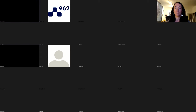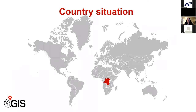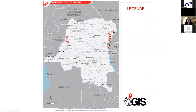Today I will start by introducing you to the context that we will map. I have a short presentation on the Democratic Republic of Congo. Let me share my screen. Here you can see the country, and in case you haven't mapped it with us yet in the Missing Maps project, here you can see where it's situated right in the middle of the African continent.